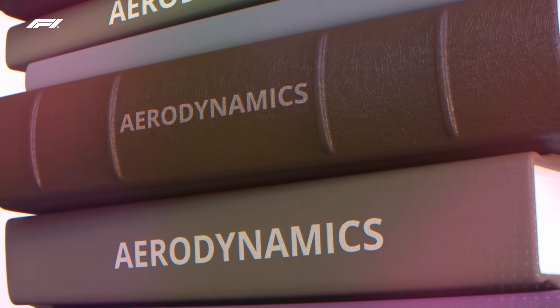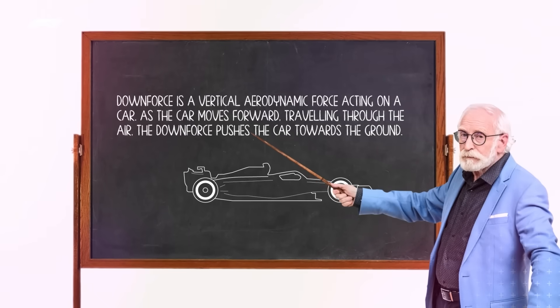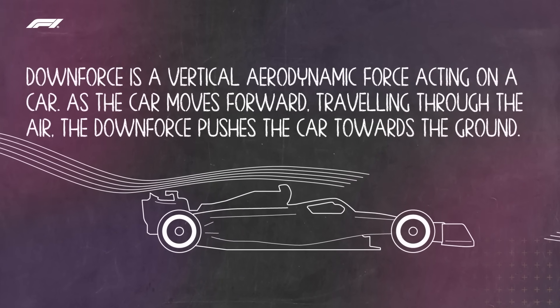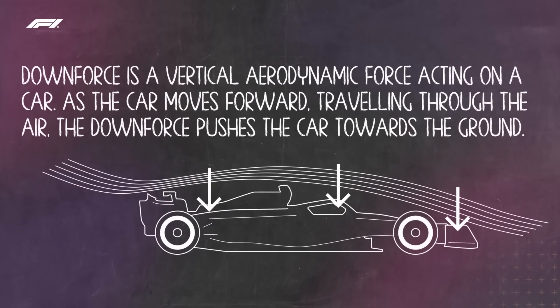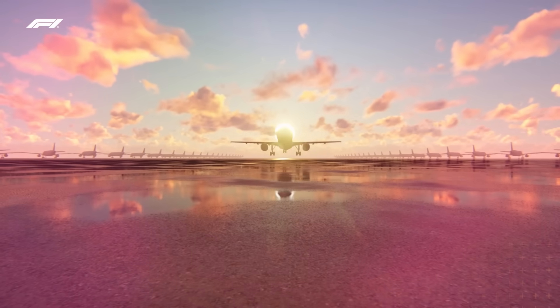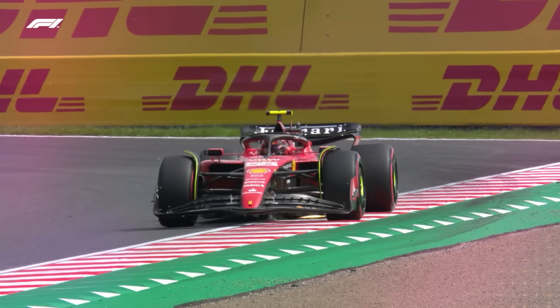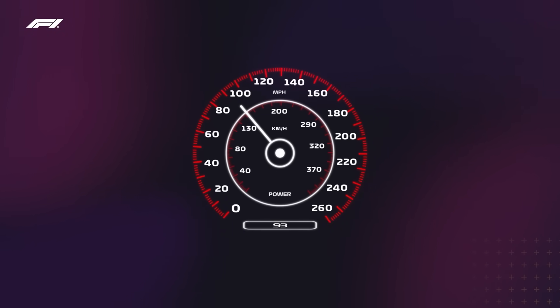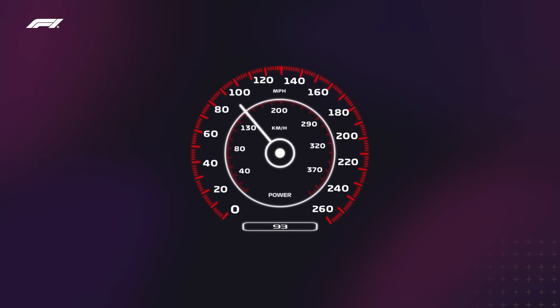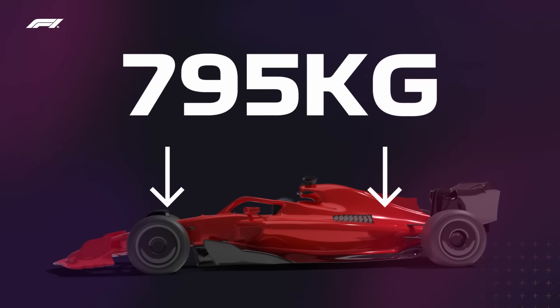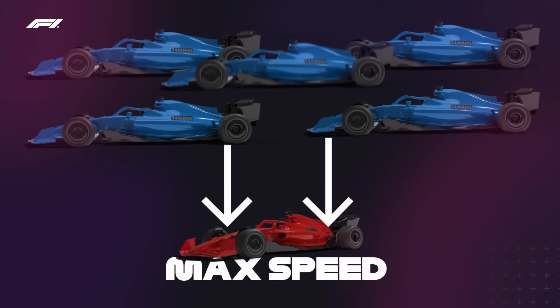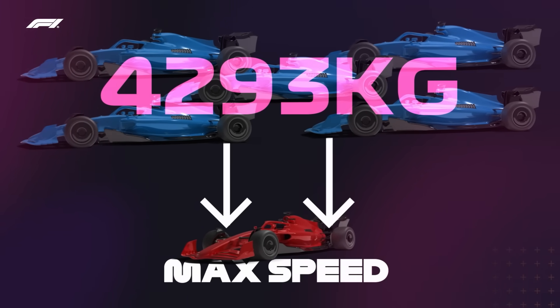Downforce is a vertical aerodynamic force acting on a car. As the car moves forward, traveling through the air, the downforce pushes the car towards the ground — effectively the opposite of what lifts a plane into the air on takeoff. To give you an idea of how much downforce a Formula 1 car can generate: when traveling at around 150 kilometers per hour or 93 miles per hour, the downforce is almost equal to the minimum weight of an F1 car — 795 kilograms. At max speed, that force is over five times as powerful.